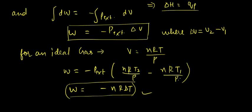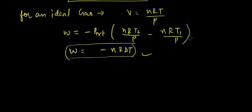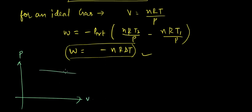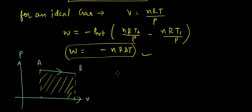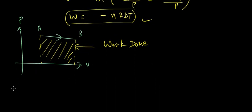Next, let us see the graph and what work done means in a PV graph. Suppose we have a PV graph and a system goes from A to B via some process. The area under the curve AB will represent the work done — that is, work done is the area under the PV curve. Now let us see what work done means in chemical reactions.